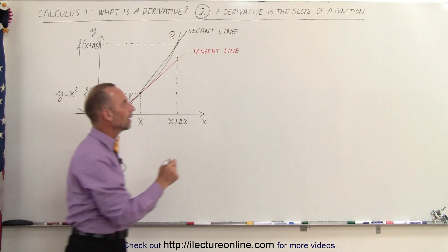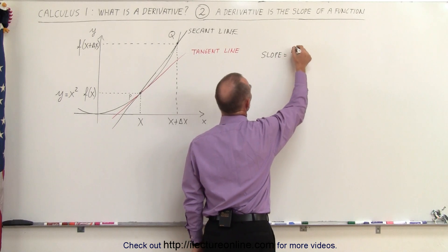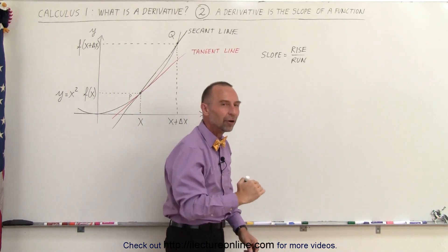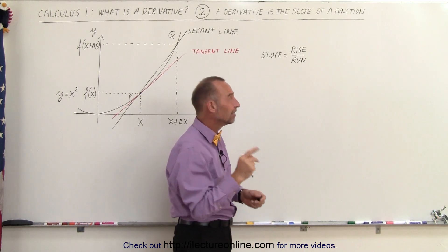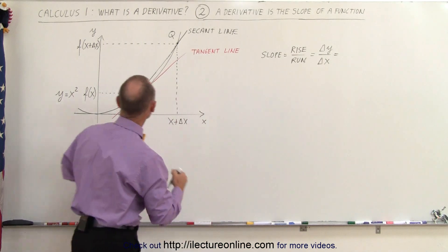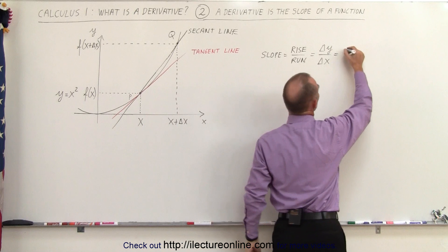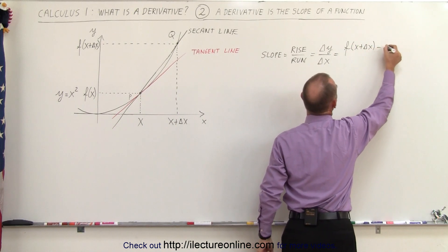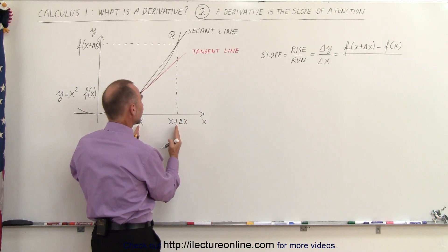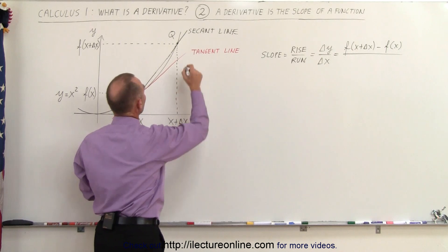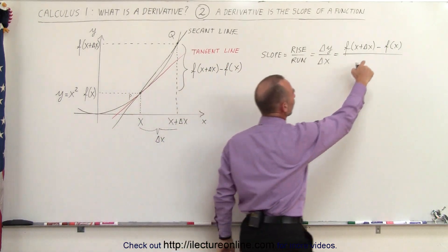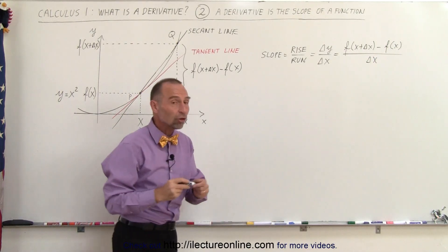Now I'm going to find the slope of the secant line. Remember the definition of slope: it's equal to the ratio of the rise divided by the run. Going from point p to point q, the run is how far I moved to the right, and the rise is how far I went up. The slope equals the change in y values divided by the change in x values — that is, f of x plus delta x minus f of x, all divided by delta x.